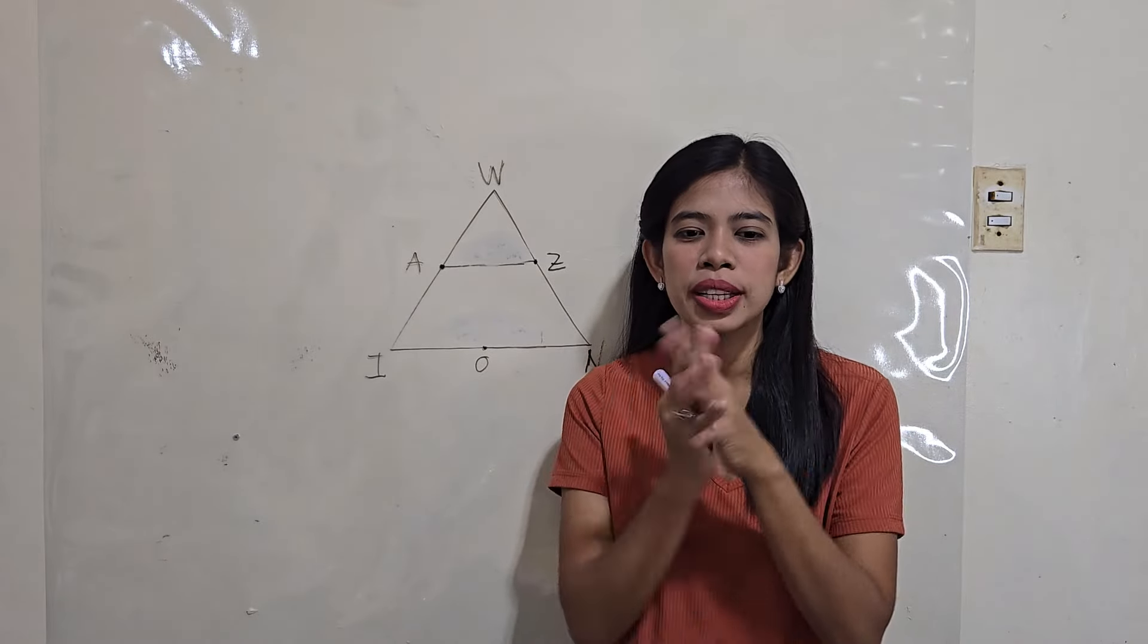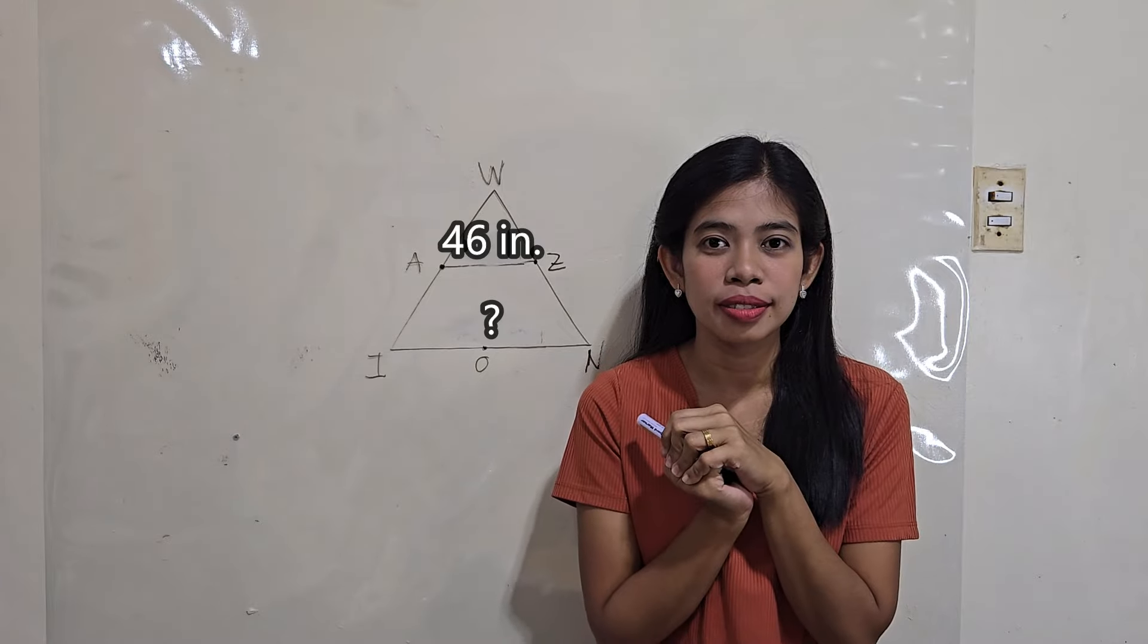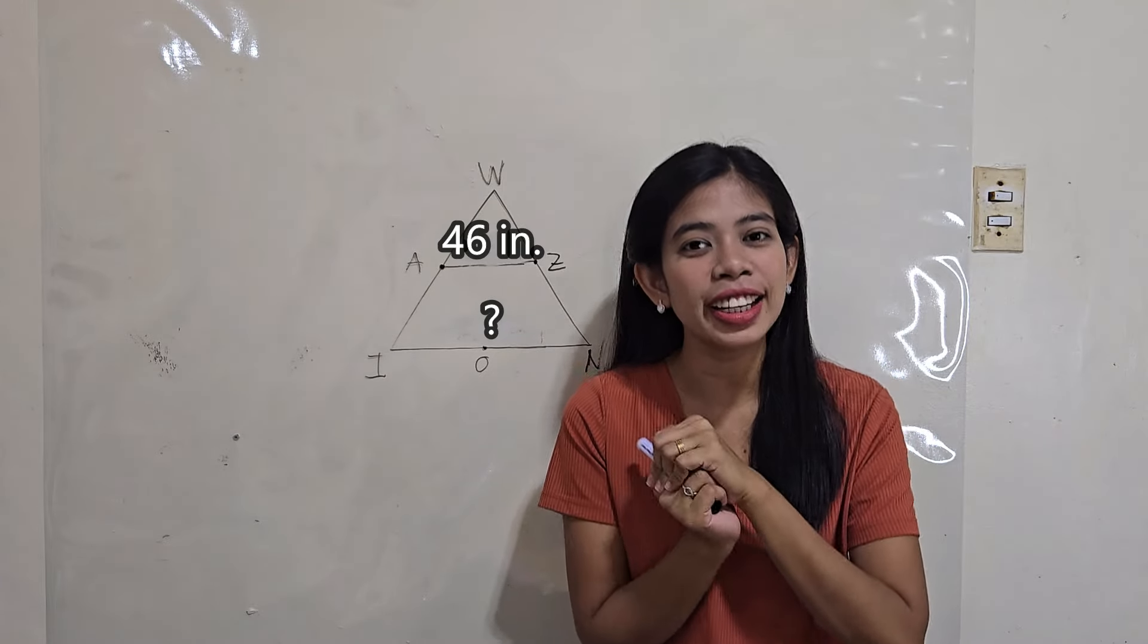How about if the measure of the midline is 46 inches? What's the measure of the third side? You got it right? That's 92 inches.